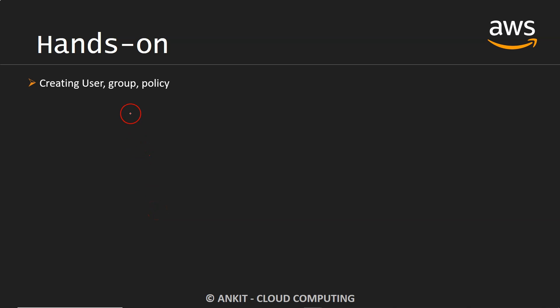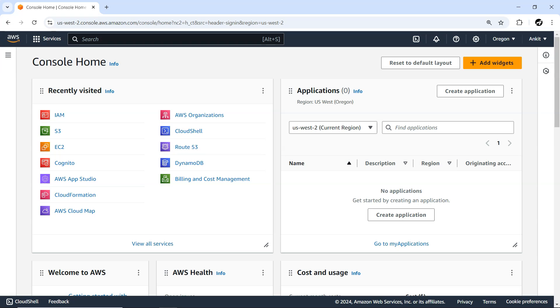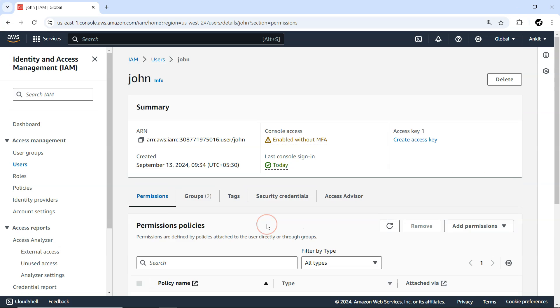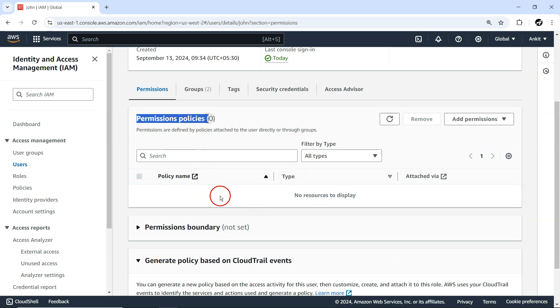Hey everyone, welcome back. In the last two videos of the same series, we tried to create a user and a group and added some users inside the group. But so far, our user is not in a position to do anything because we haven't attached any policy — we haven't assigned any permission to individual users.